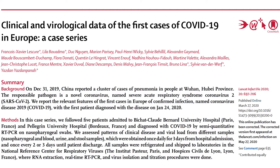This is a very good example of a case series. It presents the clinical and virological data of the first few cases of COVID-19 in Europe. For this case series, they gathered information from five patients admitted to two hospitals in France — one in Paris and the other in Bordeaux — and described the characteristics and virological features of those patients. This has been published in Lancet Infectious Diseases.